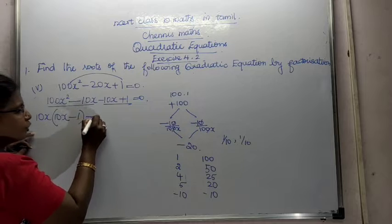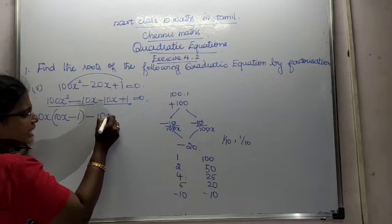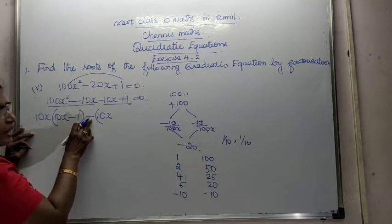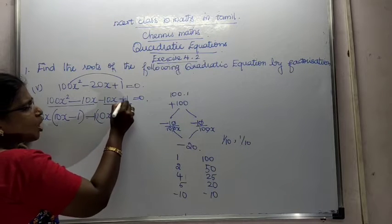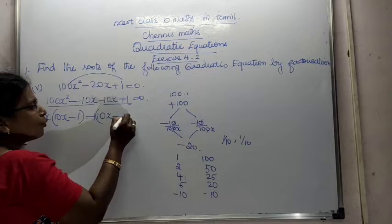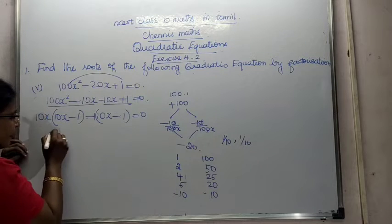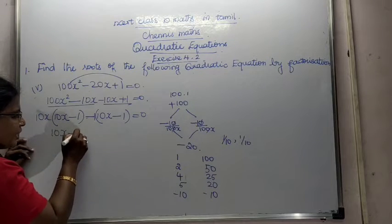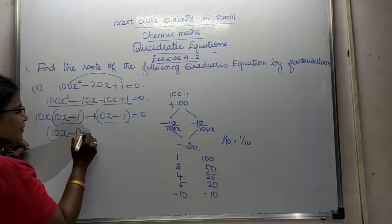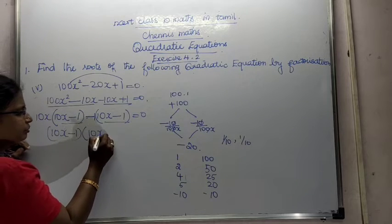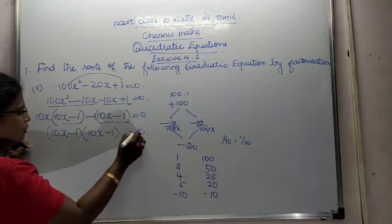Minus 10x minus 10x is equal to minus 20x. Here it is 10x. Minus 10x plus, minus 1 plus, this is common. Then minus into plus, minus 1 is equal to 0. Then 10x minus 1 common is equal to 10x minus 1. Then this term is 10x minus 1 is equal to 0.